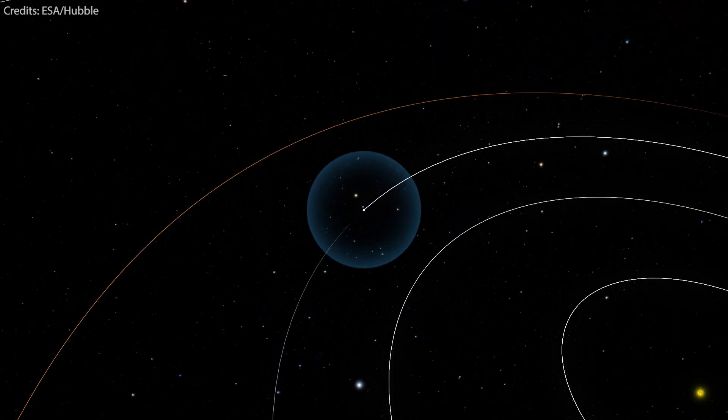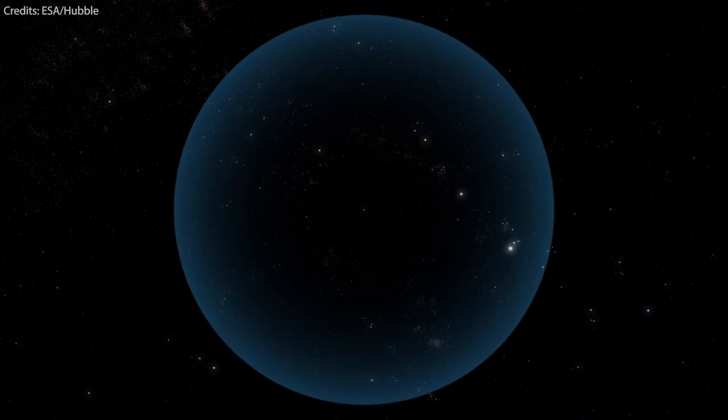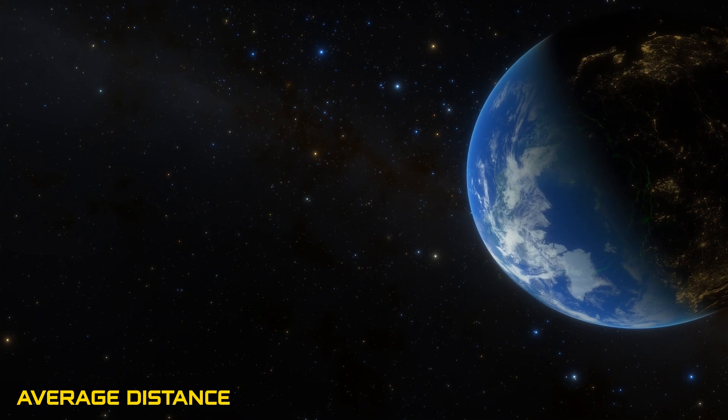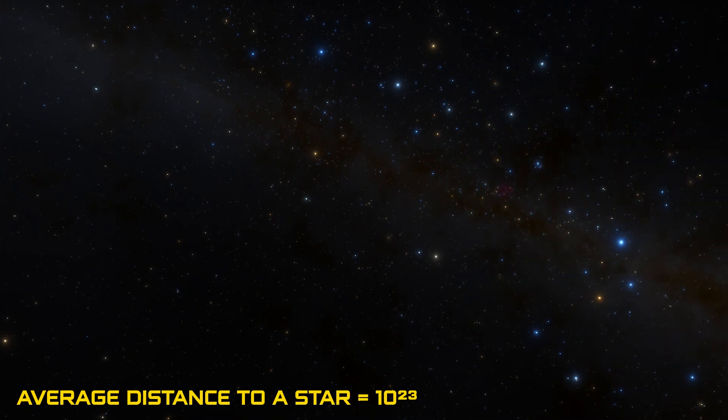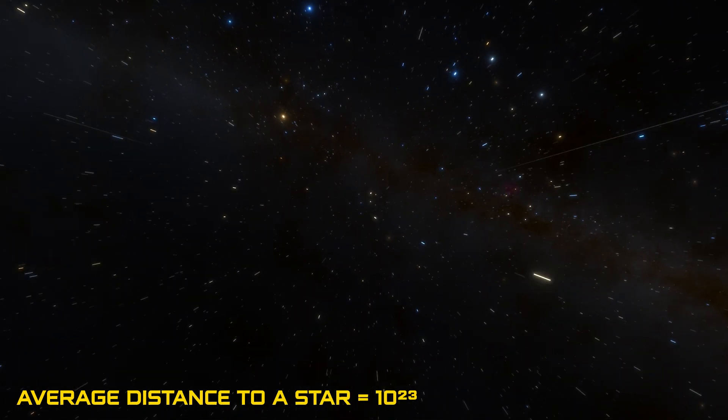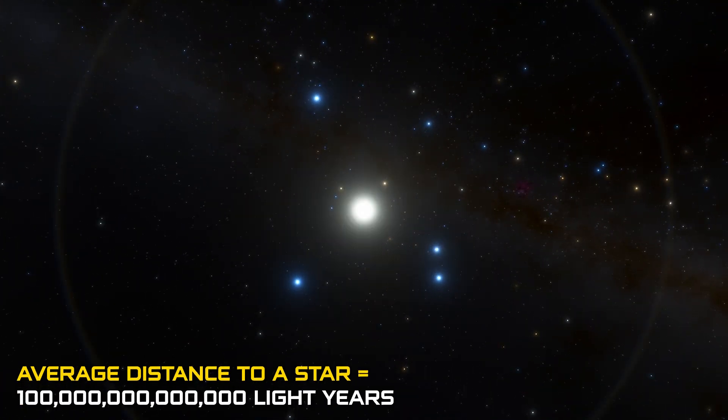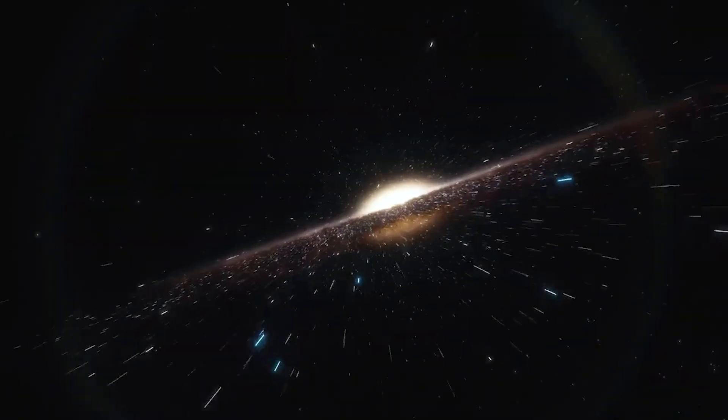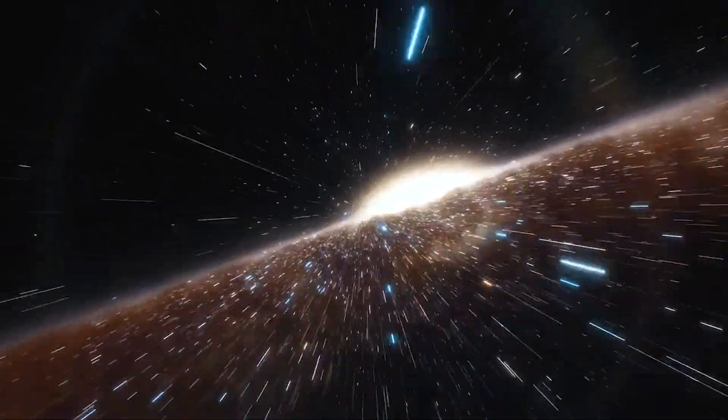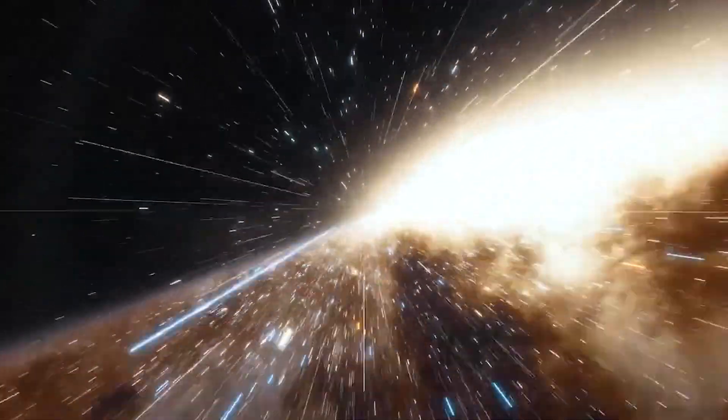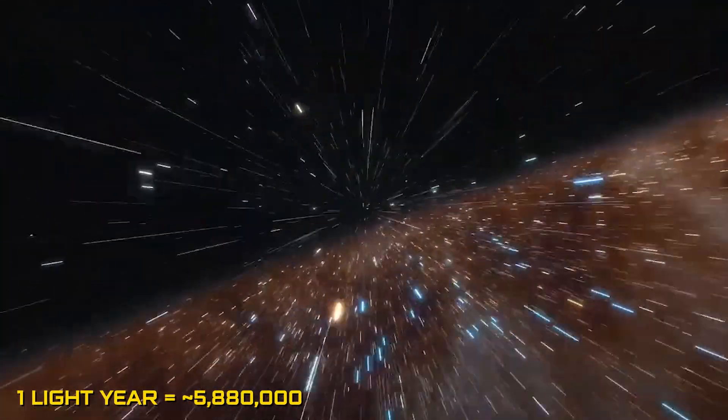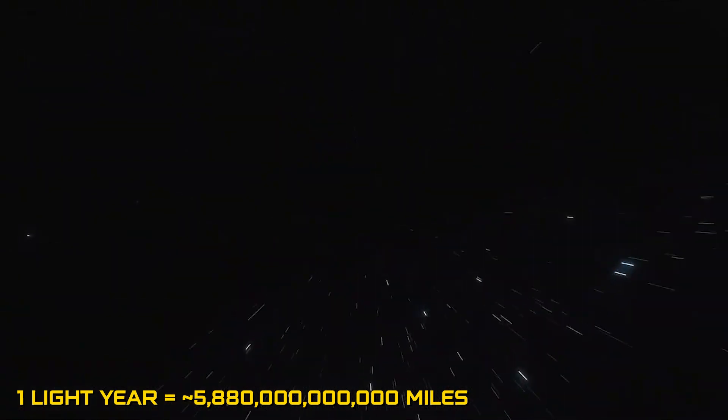Moreover, the sheer scale of the universe adds to the perception of darkness. The average distance between our blue home planet and stars in the universe is staggering, quantified at 10 to the power of 23, or 100 trillion light years. To put this into perspective, a light year is the distance that light travels in a vacuum in one year, covering a mind-boggling distance of almost 6 trillion miles in that time.